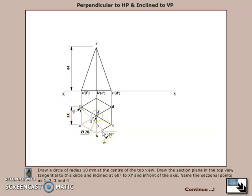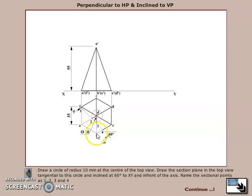After that, mark the section points. Starting from the left side, the section plane first meets edge AF — that is the first section point. Next, the section plane meets line AO at a second point. Then the third point is on BO, and the fourth point is on BC. So there are four section points obtained when we cut this solid by a section plane perpendicular to HP and inclined to VP.